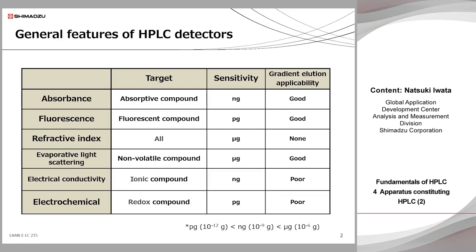An evaporative light scattering detector can be used with gradient elution for non-volatile compounds, but generally its sensitivity is not so good as that of the UV detector. It is known that the calibration curve obtained by ELSD is not linear like other detectors. An electrical conductivity detector measures changes in electrical conductivity and is mainly used for the analysis of inorganic ions that have no UV absorption. An electrochemical detector has an electrode in the cell, and when a voltage is applied, an oxidation or reduction reaction is induced for target compounds, and a weak current between the target compounds and the electrode is measured. Although applicable compounds that cause redox reactions are limited, it is generally expected to have higher sensitivity than that of the UV detector.